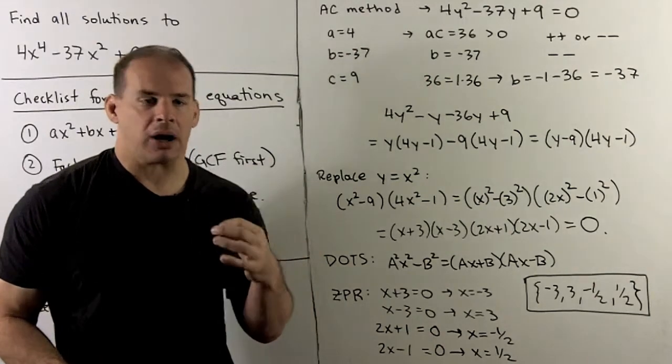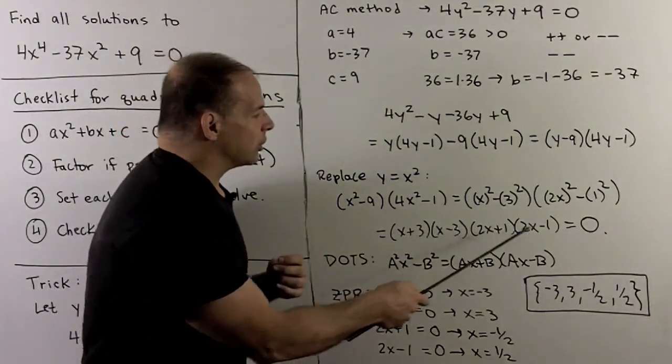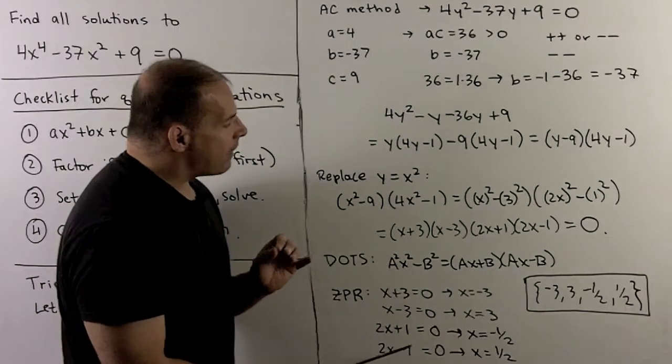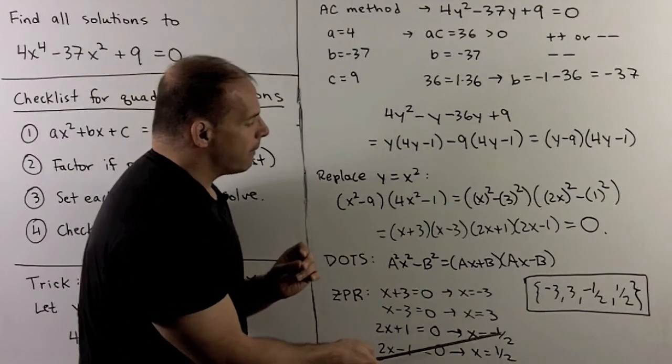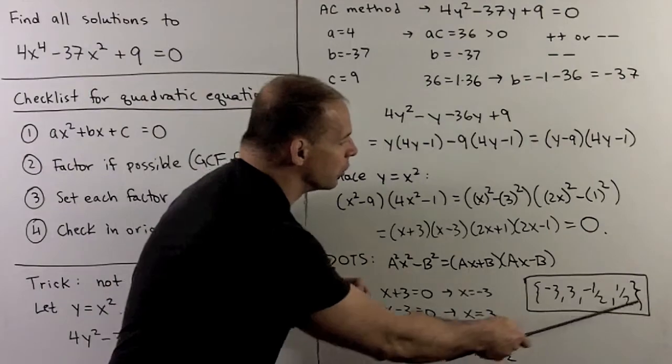Now, we can apply the zero product rule to each of these factors. What comes out: we have minus 3, 3, minus 1 half, and 1 half. So, those are our solutions.